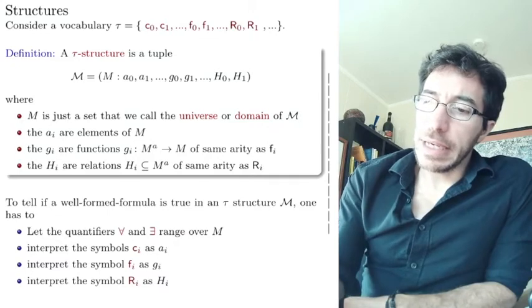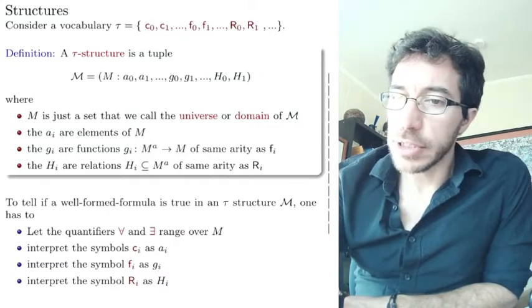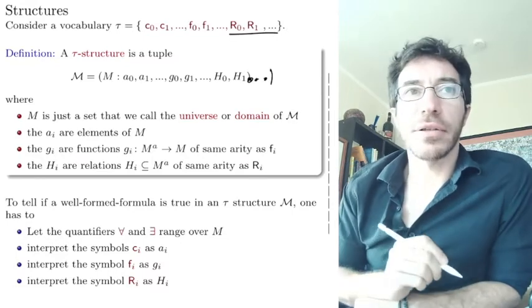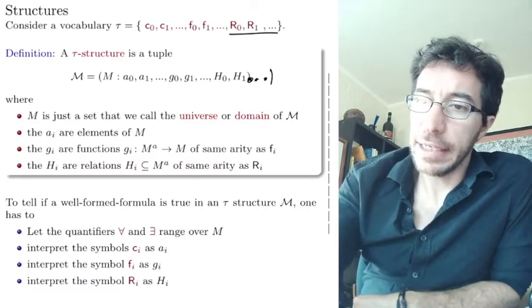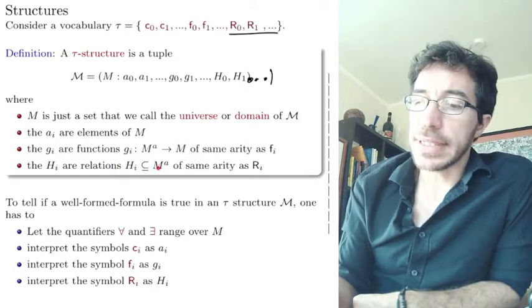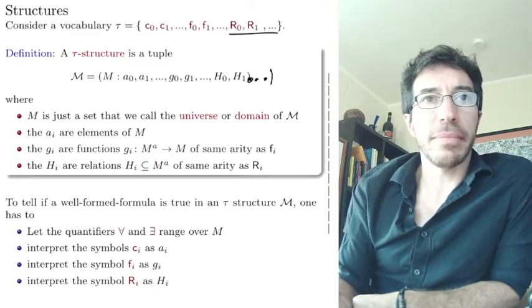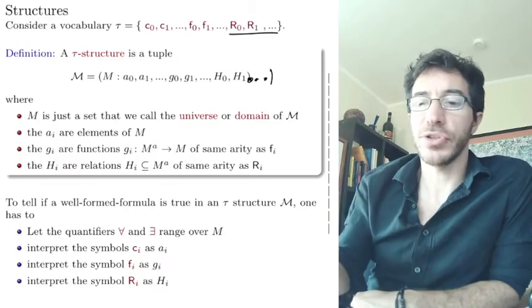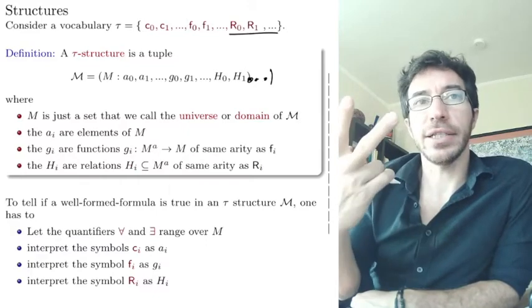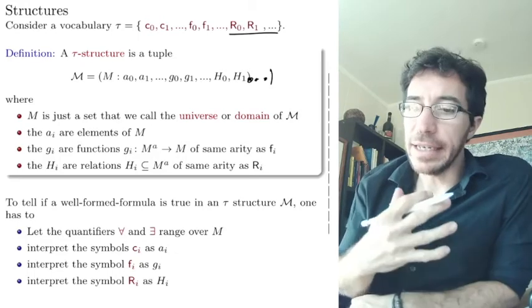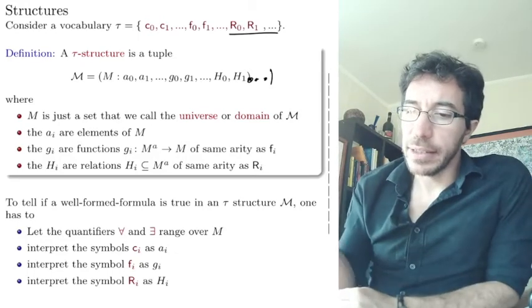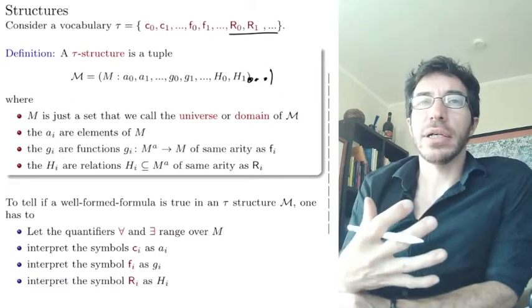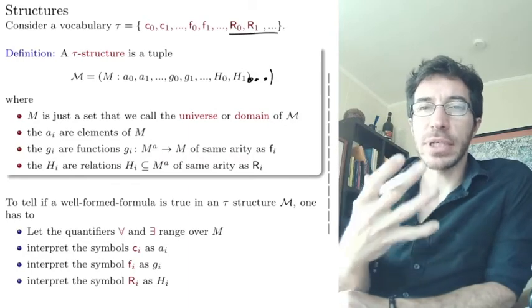And then we have a bunch of relations. Actually, we have more than those just there. We have like dots, dots, dots. We have as many as there are relations in our vocabulary. And the idea is that these relations are actual subsets of the a tuples from M. So a here is arity of R. So if R has arity two Ri, then Hi has to have arity two also. Same arity. And then essentially what's going on with this? So a structure is telling us one way, a τ structure, one way of interpreting τ formulas. The formulas in the language have to do with this particular vocabulary.